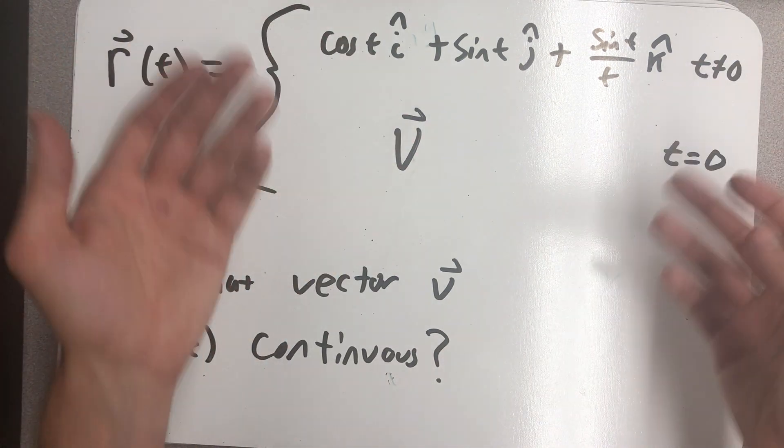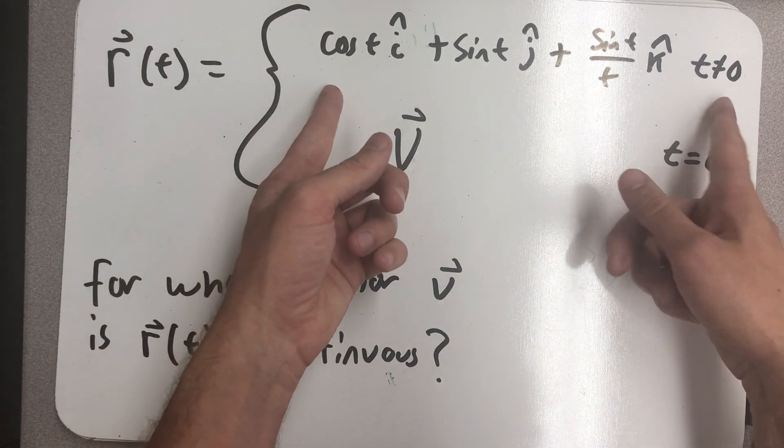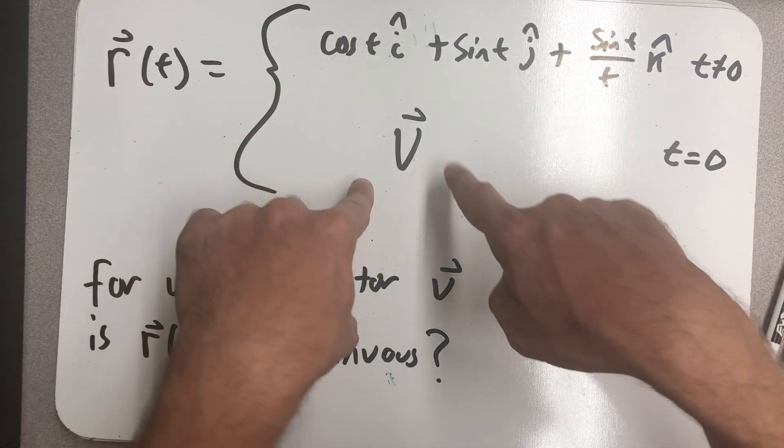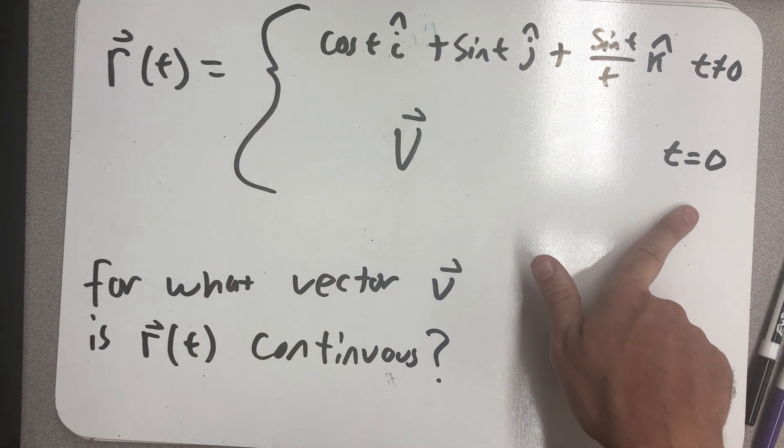So here I have a vector function in two parts, one part, what we were just dealing with for all of the t's not equal to zero, and then some vector v that we're going to look for when t is zero.